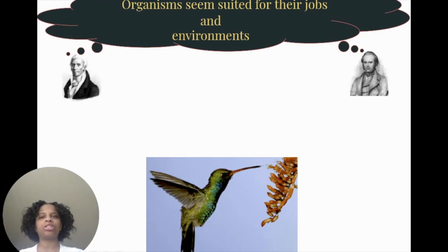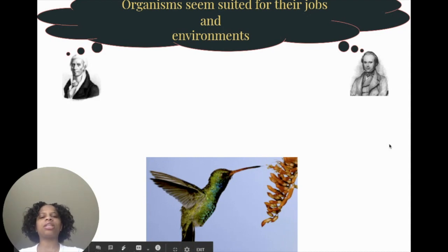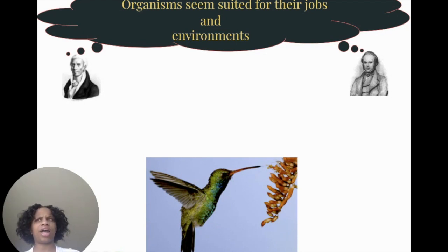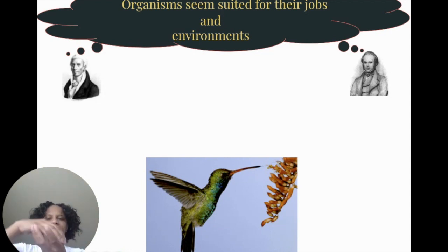If you're working on the worksheet I provided, a central idea that both of these scientists shared is that organisms seem suited for their jobs in their environment. This is a picture of a hummingbird with a very long beak. Why would a hummingbird have a really long beak? It helps them in their specific environment because the flowers they get nectar from are very elongated, so their beak helps them reach inside.